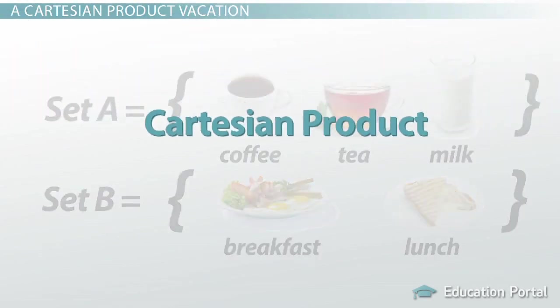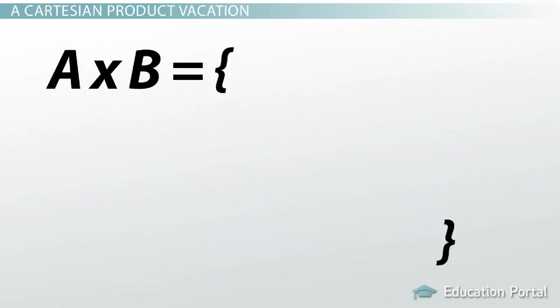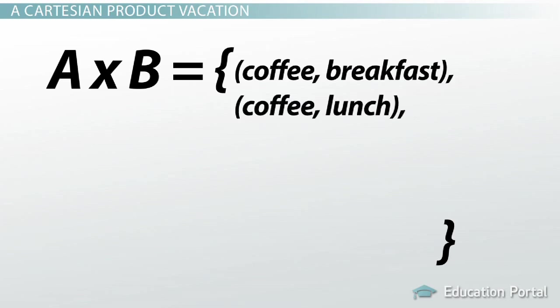The Cartesian product written A times B is putting the elements from set A matched with elements in set B together. So the Cartesian product A times B equals coffee, breakfast, coffee, lunch,